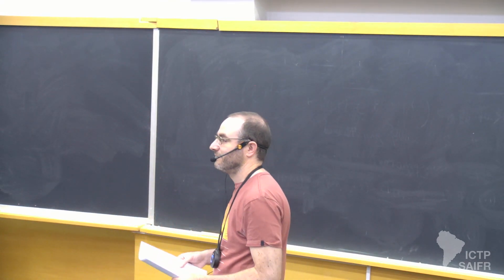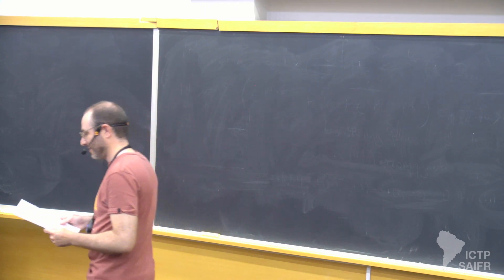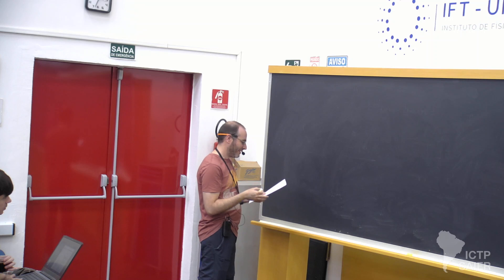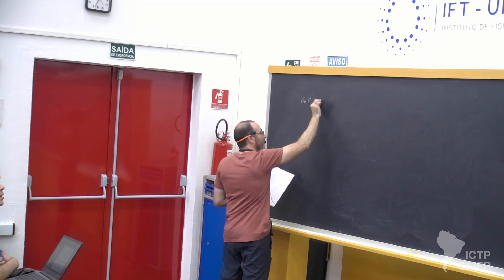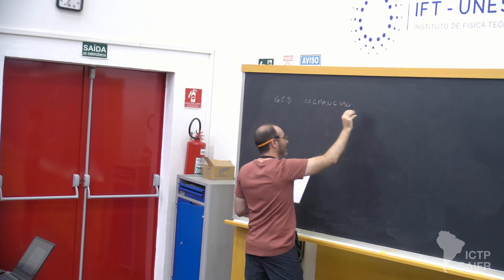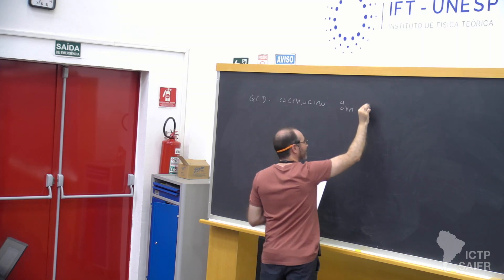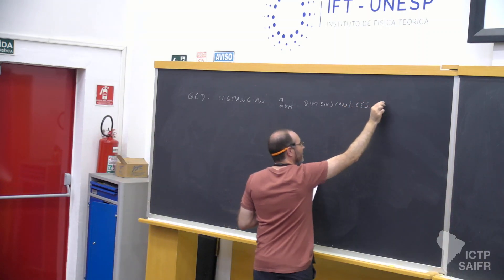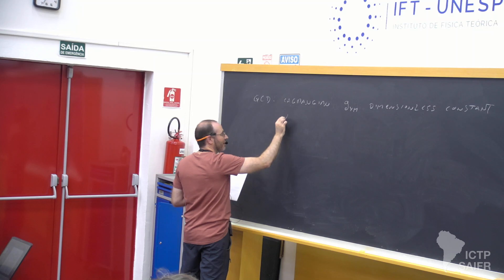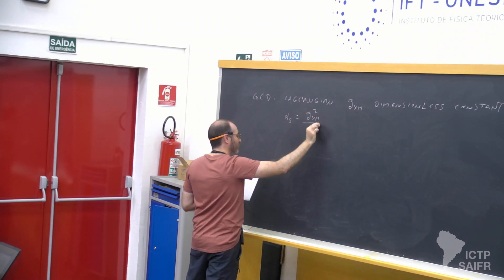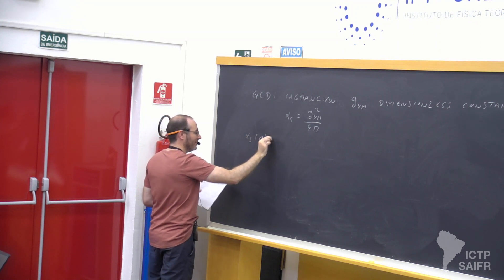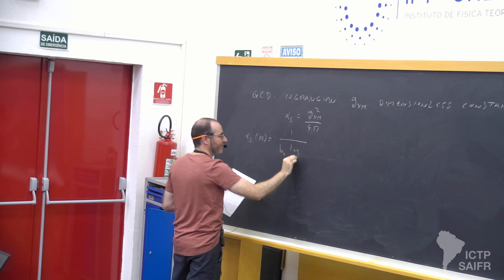Let's start with a lecture by Carlos. So yesterday, let me remind you some of the things we said about QCD. The QCD Lagrangian depends on a dimensionless constant — the Yang-Mills coupling. When we look at the quantum corrections, this coupling is renormalized and becomes dependent on the renormalization scale, so it has logarithmic dependence.